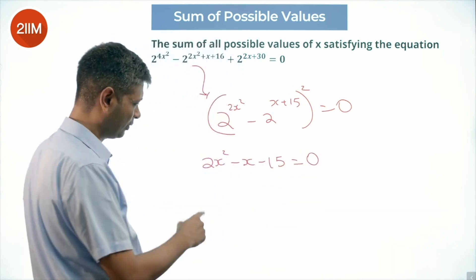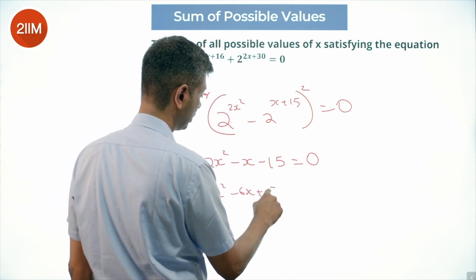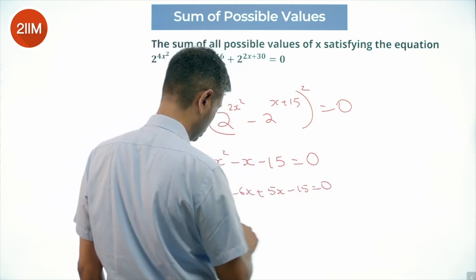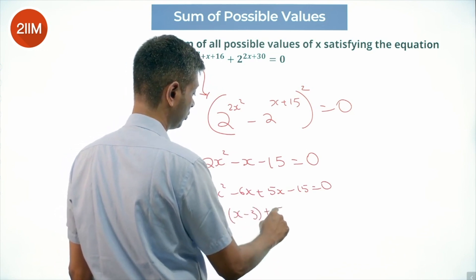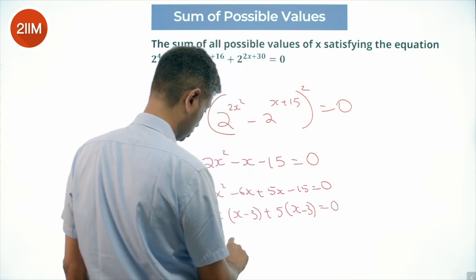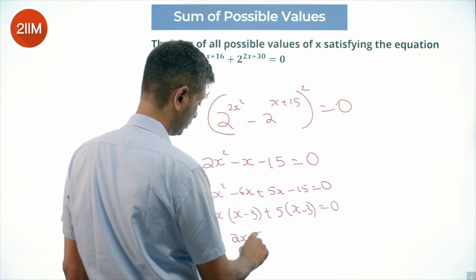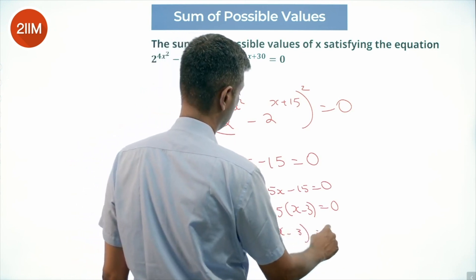Product is 30, difference is x, so 2x square minus 6x plus 5x minus 15 equal to 0. 2x into x minus 3 plus 5 into x minus 3 is equal to 0. 2x plus 5 into x minus 3 is equal to 0.